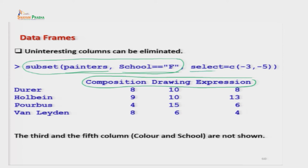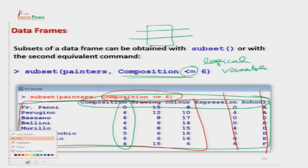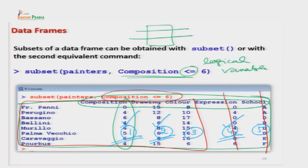इसके लिए subset command में एक option add करते हैं - select। Select में जिन columns को हटाना है उनकी position number को minus sign के साथ देते हैं। जैसे painters में columns हैं: composition (1), drawing (2), color (3), expression (4), school (5)। हमें column 1, 2 और 4 रखने हैं और column 3 (color) और column 5 (school) हटाने हैं। तो select = c(-3, -5) लिखेंगे।